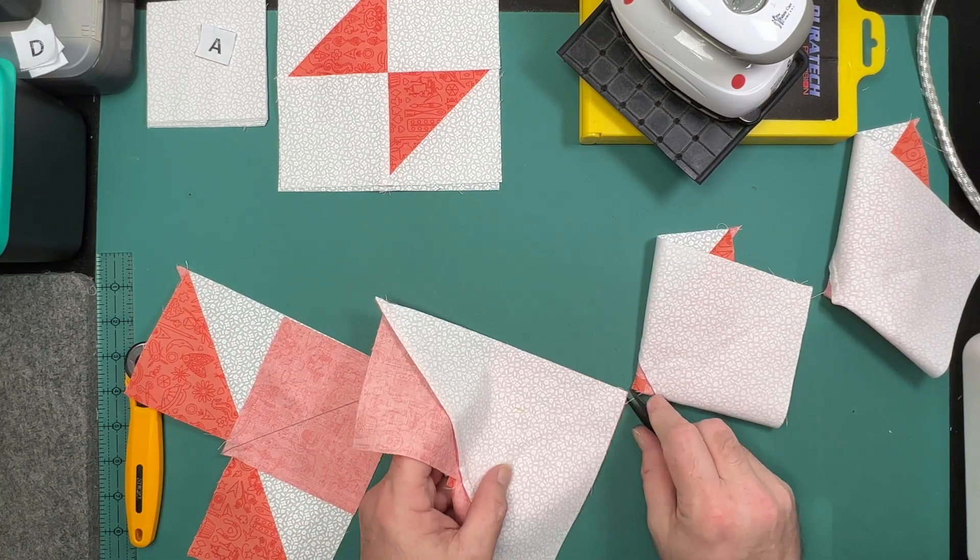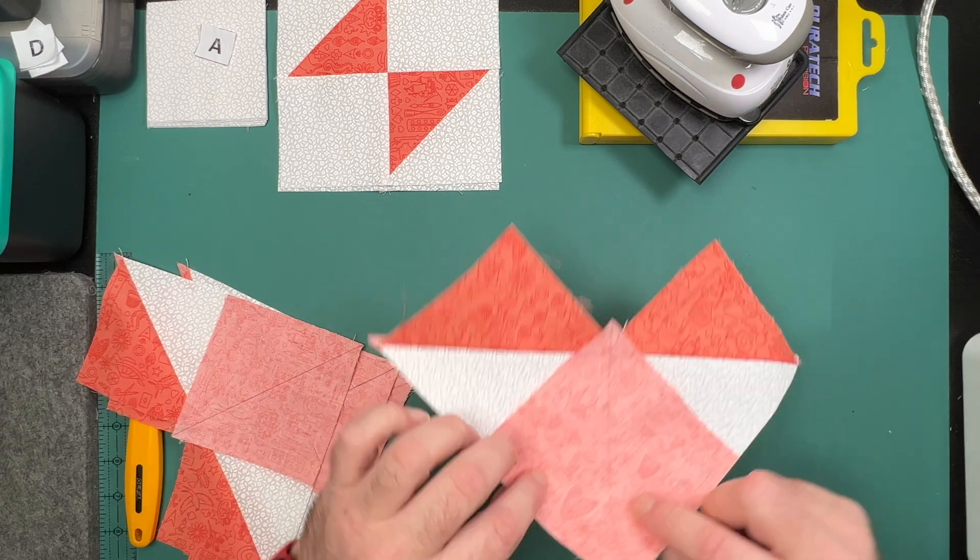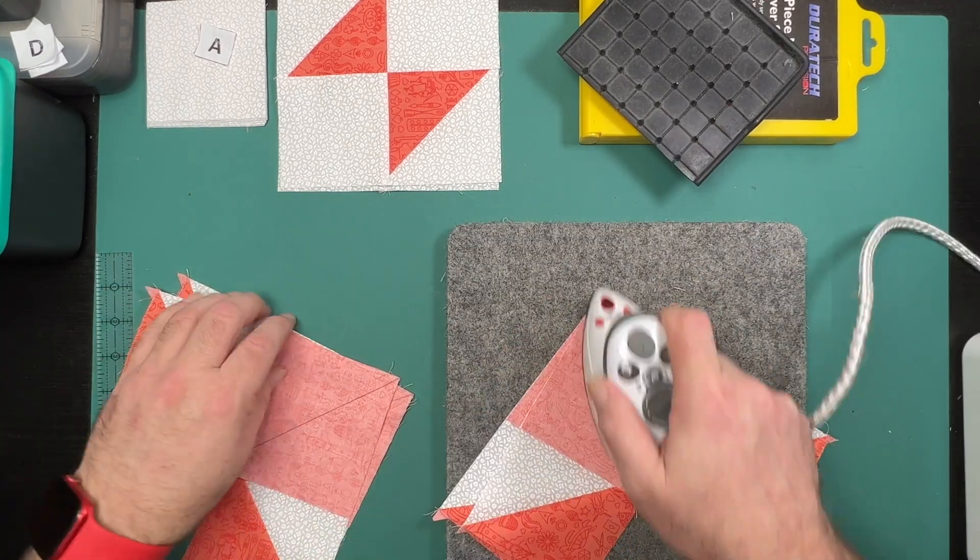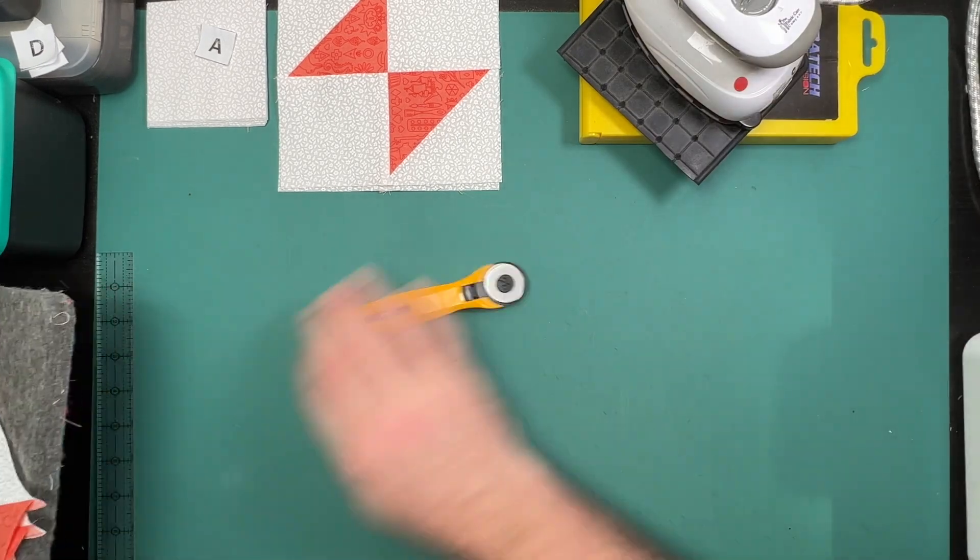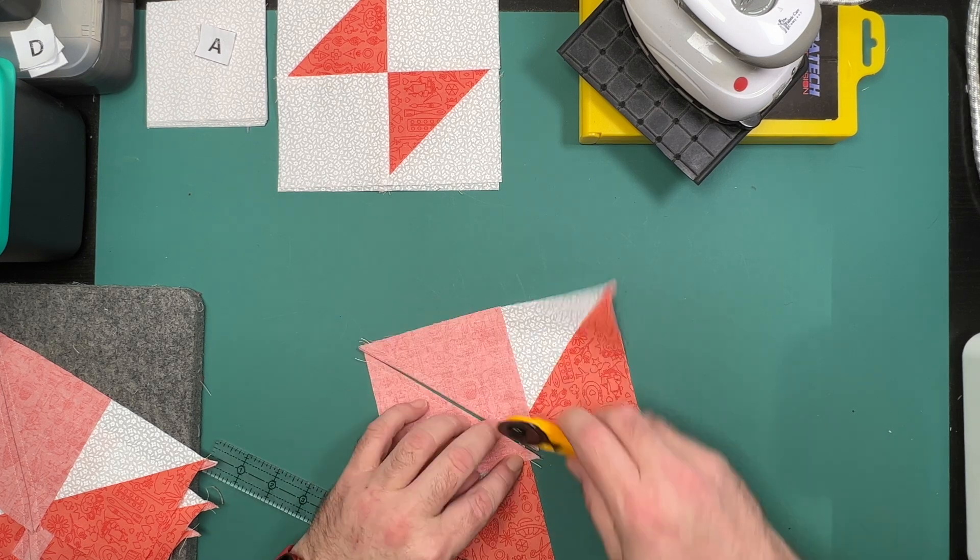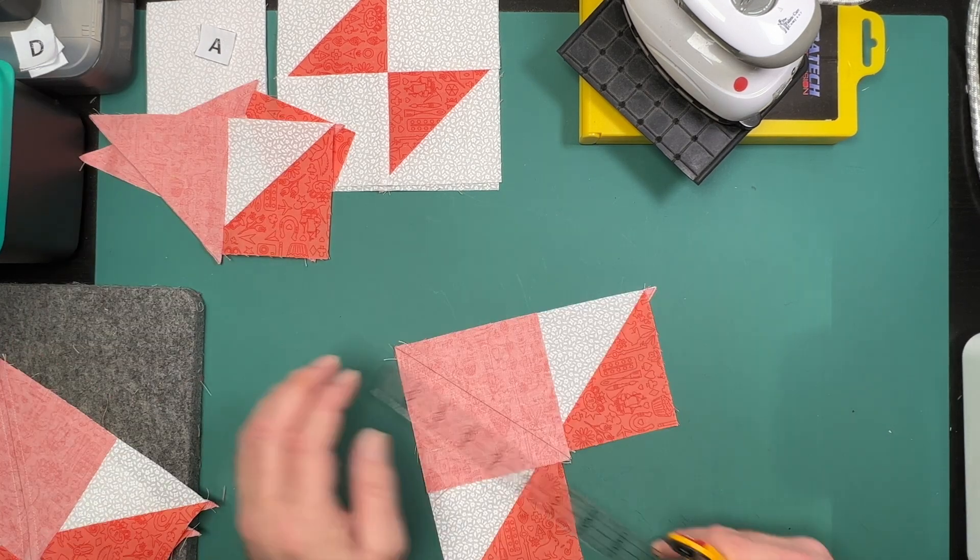With this stitching now done, we will once again flip these apart and give them a quick press to set those seams before slicing them in half along this drawn line and then pressing our little triangles out again away from that center white triangle. We will then be ready to trim these down.